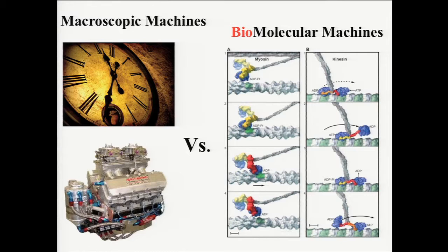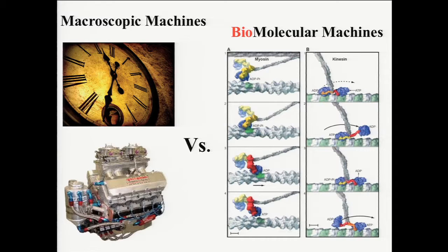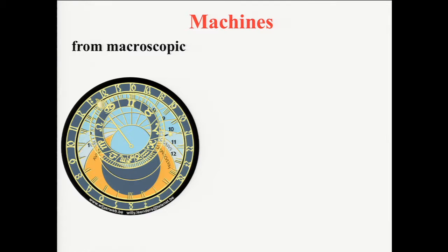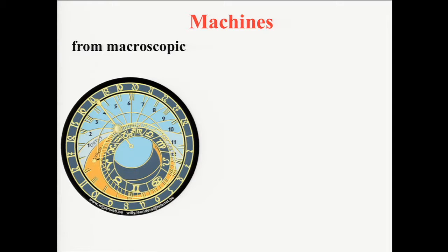If we think about machines, there's always the question: should we think about molecular machines just like an engine, where they just become smaller machines, or are they actually different? They are actually very different. This clock in Prague moves as a nice mechanical machine with parts moving perfectly. But a molecular machine is much more something that can melt and form all the time — it goes more on the Dali version of how clocks should look, not the Prague clock.